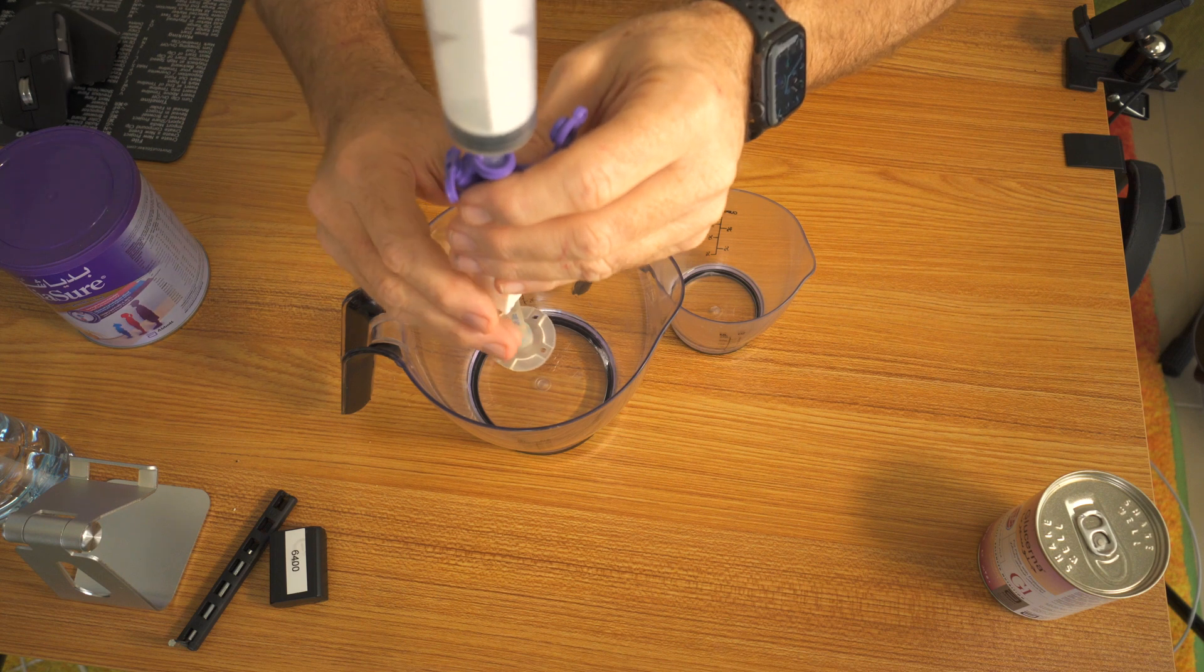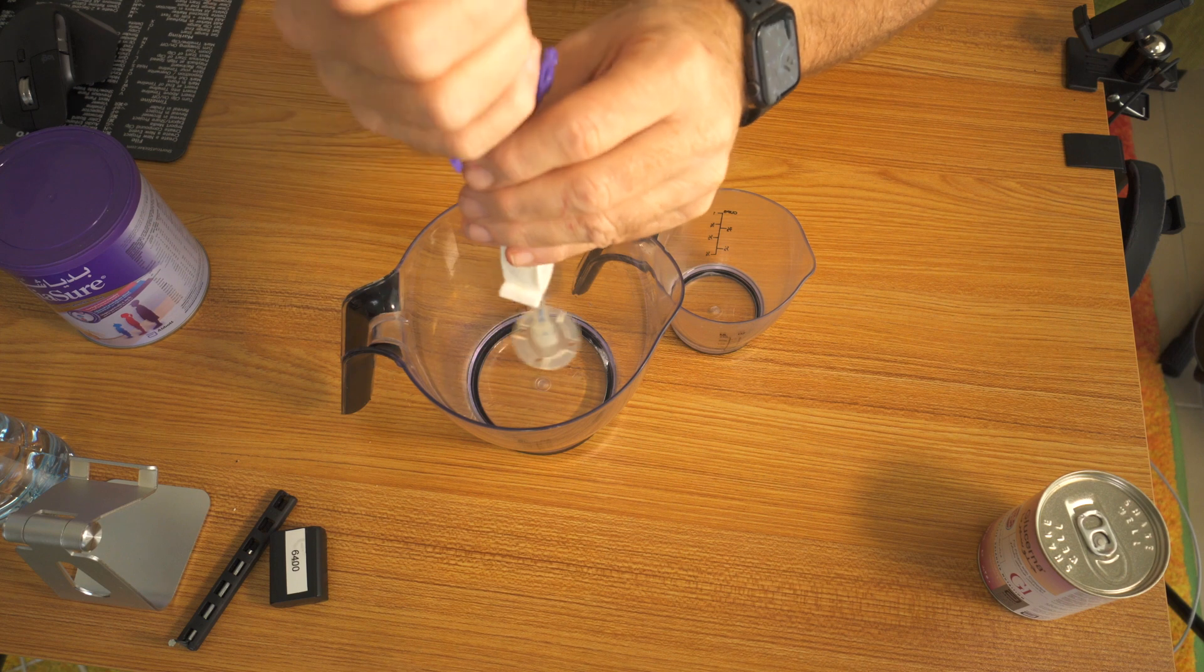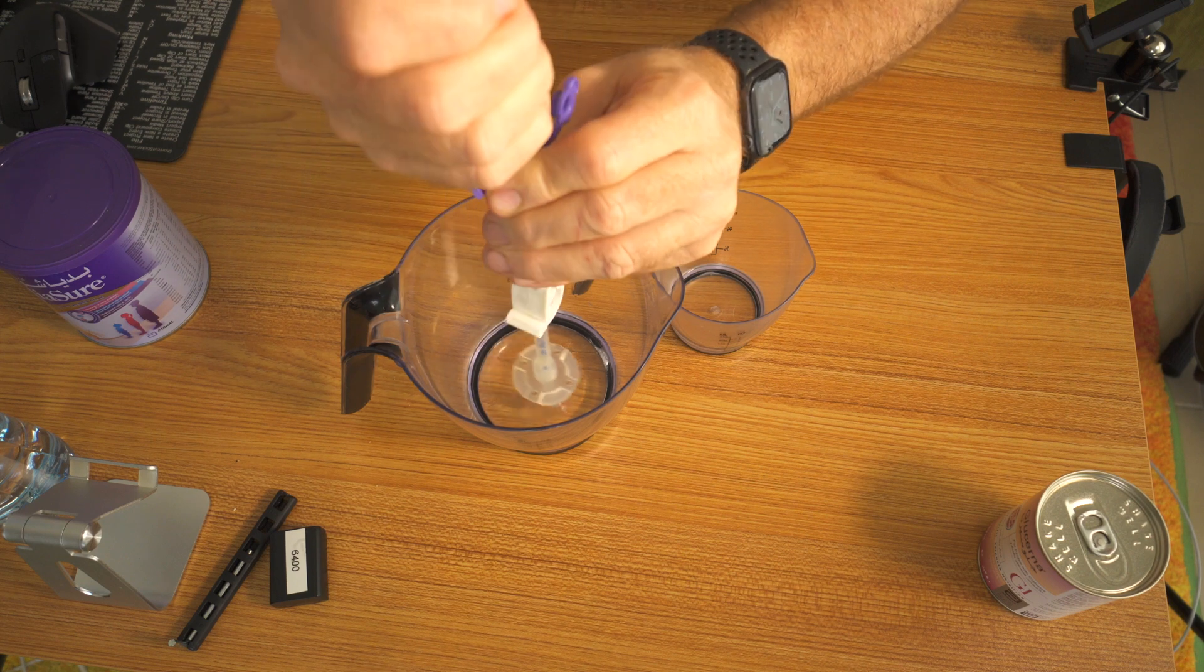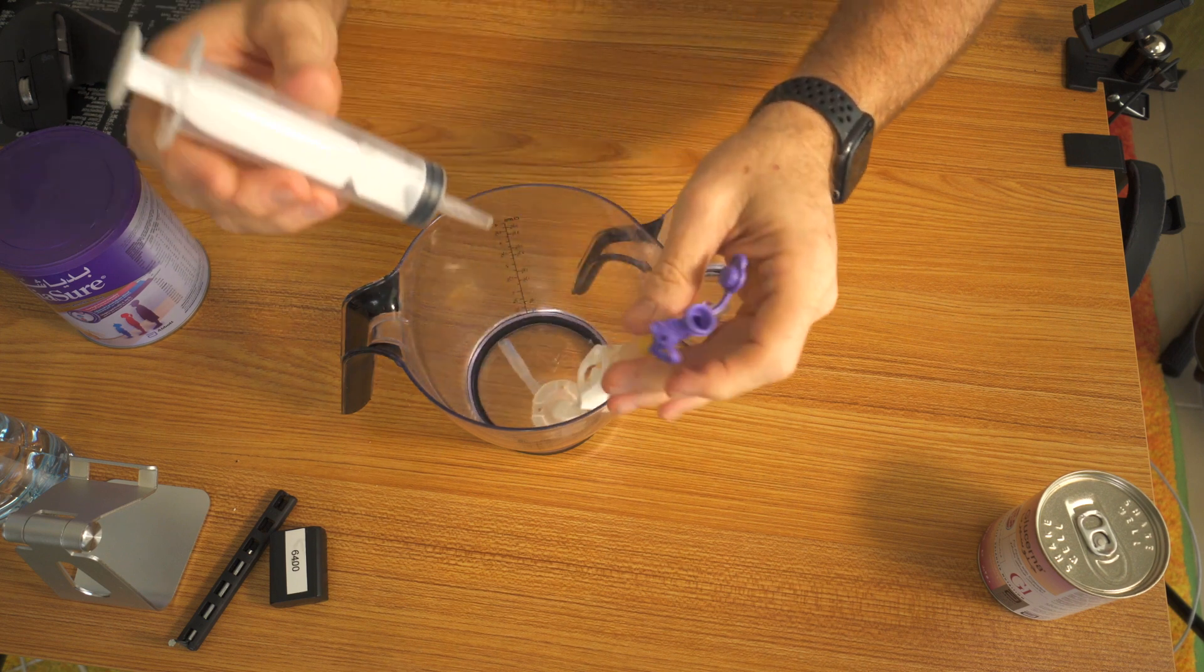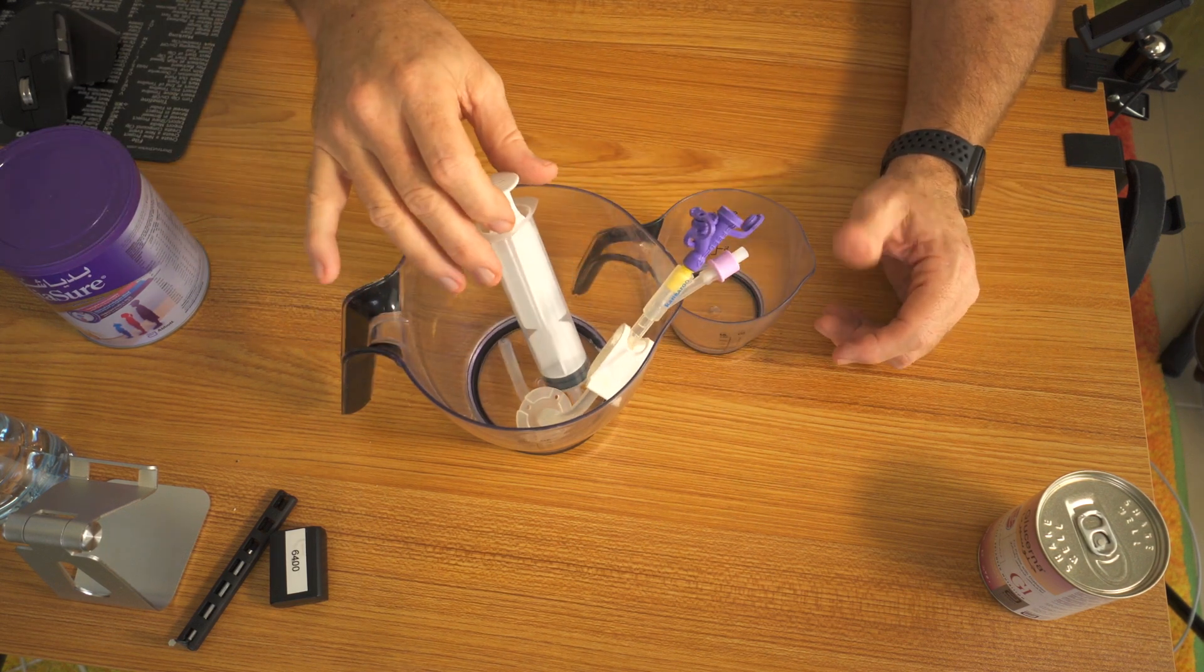This also is helping keep any blockages at the end of the tube from staying in there and interfering with you getting your food in. Now we'll remove the syringe again and set the syringe down.